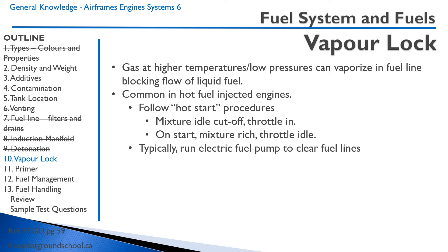A vapor lock is caused when gas at higher temperatures and low pressures vaporizes in the fuel line, blocking the flow of liquid fuel. This is a very common problem in fuel-injected engines when they are warm and you're trying to start them. If this happens, make sure you're familiar with the hot start procedure — typically mixture at idle cutoff with the throttle in. When the engine starts firing, push the mixture rich and pull the throttle to idle. You can also run the electric fuel pump to clear any vapor in the fuel lines.